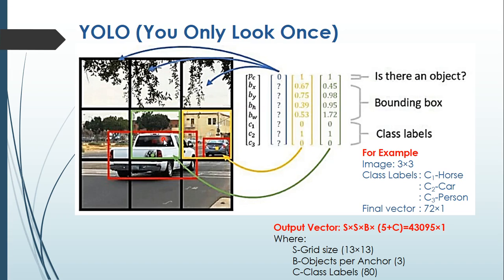For illustration, an image is considered with a 3 by 3 grid of cells. Each cell is known as an anchor box and is represented as a vector with its values. For example, if we want to identify three class labels present in the image such as horse, car, or person, the size of the vector for each anchor box is 8 by 1. The first element represents whether an object is present or not. If you see the first three anchor boxes in the image, there is no object present — neither horse, car, nor person — so the element value will become 0.